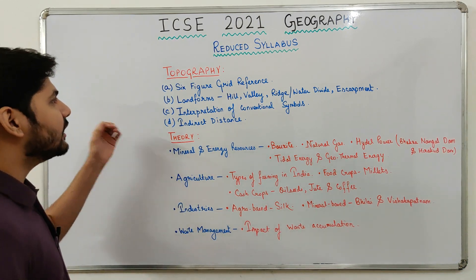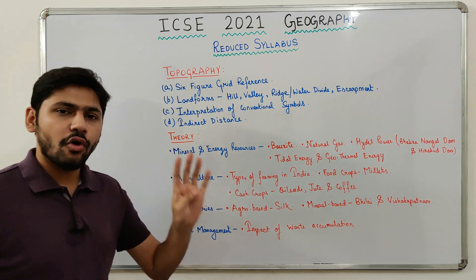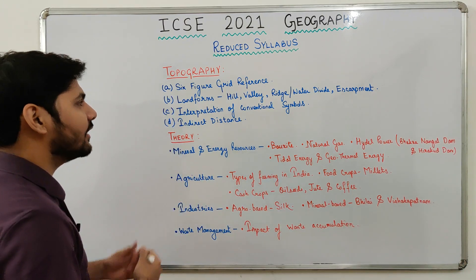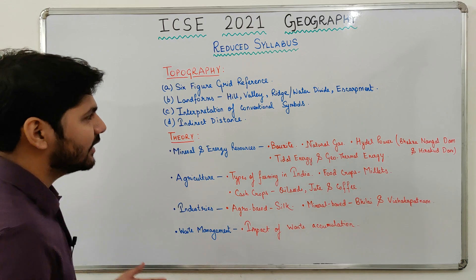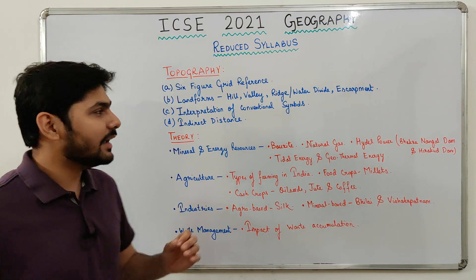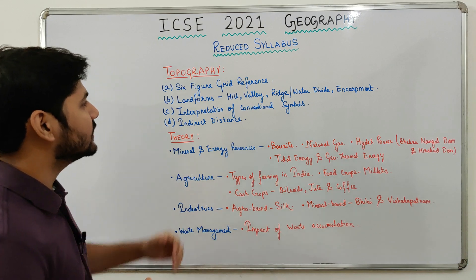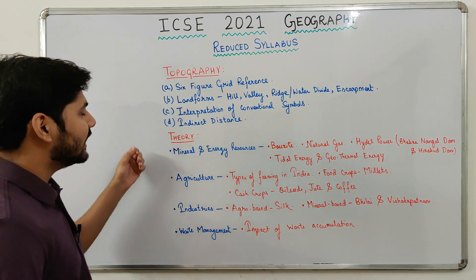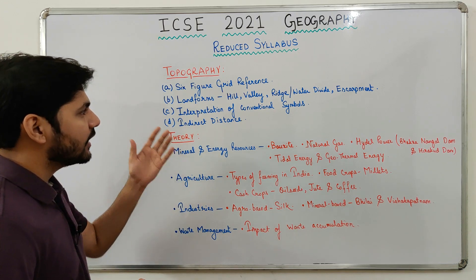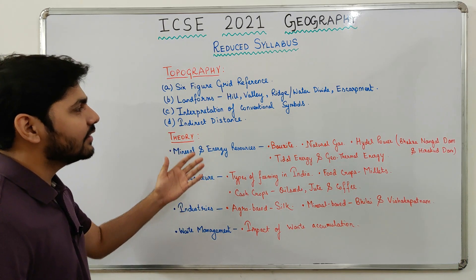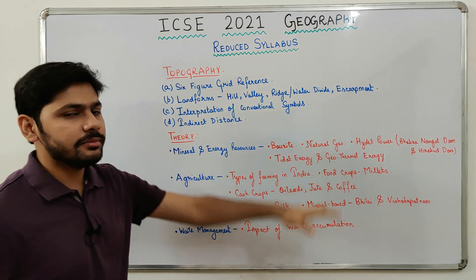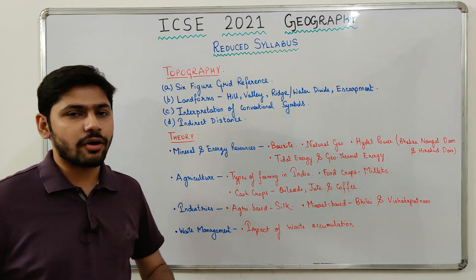Talking about the reduced syllabus of topography, four topics have been removed. First, six-figure grid reference — this is good news because many students face problems finding six-figure grid references. Second, a few landforms have been removed: hill, valley, ridge or water divide, and escarpment. So these landforms have been removed from your syllabus.